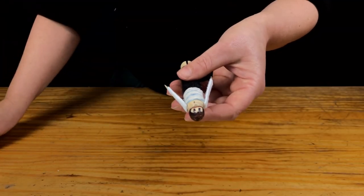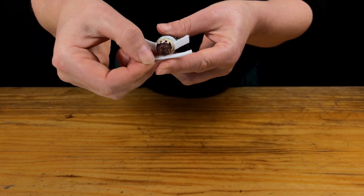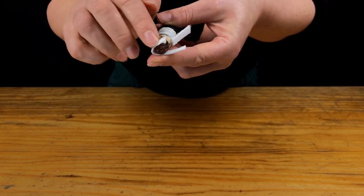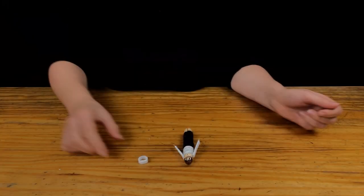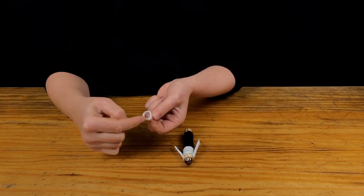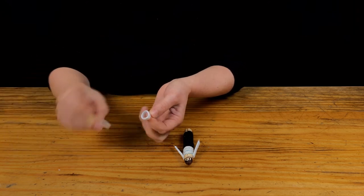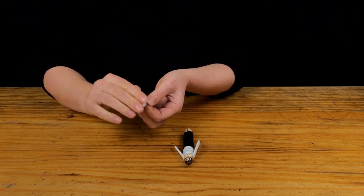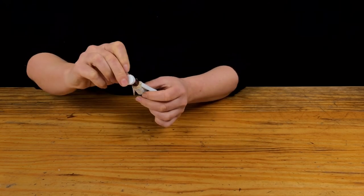To make the hat, cut a thin rectangle of felt and wrap it around the head to get a measurement. Glue into a circle headband shape. Cut out a circle of felt and glue it to the top of the headband. Now glue the hat to the head of the puppet.